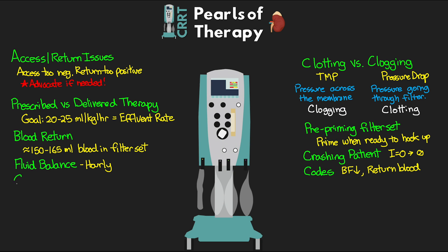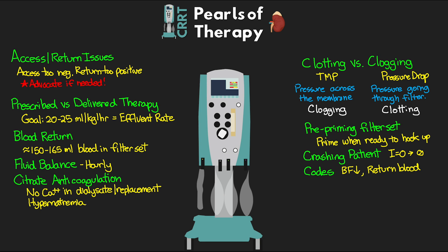Regarding citrate anticoagulation pearls: ensure you're using dialysate and replacement solution with no calcium, as calcium in normal pre-mix bags can bind the citrate and make it less effective. If using a hypertonic citrate solution such as trisodium citrate, closely monitor the patient's sodium level, as these solutions can lead to hypernatremia. If the patient becomes hypernatremic, reduce the sodium in the dialysate or replacement fluid. At some facilities, there is a protocol to switch between normal saline, half normal saline, and D5W as replacement fluid based on the sodium level. When starting or stopping therapy, it is absolutely vital that the citrate and calcium infusions are stopped and started together — never run one without the other.